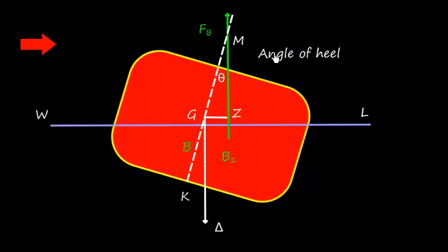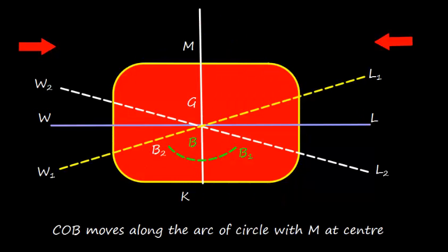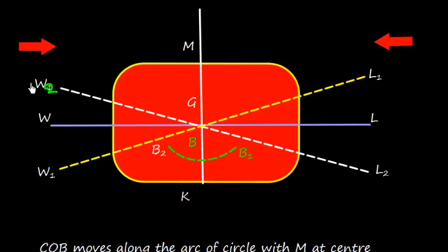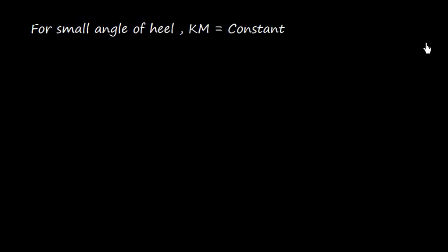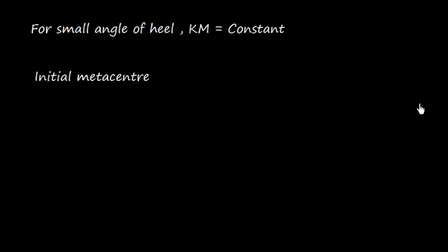The angle theta is the angle of heel. For simplicity, instead of inclining the ship we incline the waterline. With waterline W1L1 we get center of buoyancy B1 and a perpendicular from B1; with waterline W2L2 we get another center of buoyancy and perpendicular. We can say the center of buoyancy moves along the arc of a circle with M at the center, and therefore for small angles of heel, KM can be considered constant. This M is the initial metacenter.